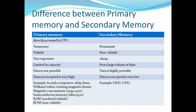Primary memory is very fast but limited in capacity. Secondary memory is cheaper than primary memory and can store a large volume of data. Primary memory data is not portable, but secondary memory data is highly portable — for example via CD, pen drive, etc. In primary memory, data access speed is very high since it is directly accessed by the CPU. In secondary memory, data access speed is comparatively lower.